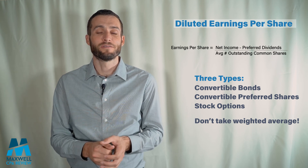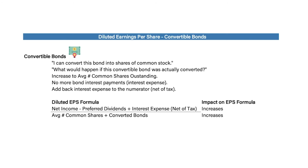For convertible bonds in diluted EPS: a convertible bond means you can convert the bond into shares of common stock. If converted, there would be an increase to the average number of common shares outstanding in the denominator. Additionally, there would be no bond interest payments, so we add back interest expense net of tax. The updated formula becomes: net income minus preferred dividends plus interest expense net of tax, divided by average common shares plus the additional shares from the convertible bonds — an increase in both the numerator and denominator.